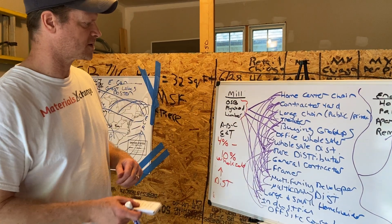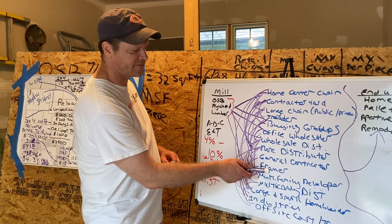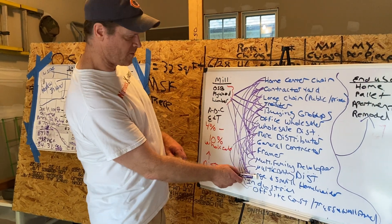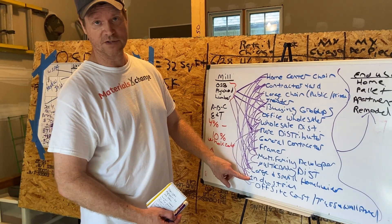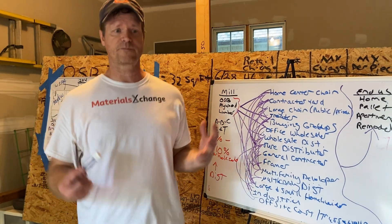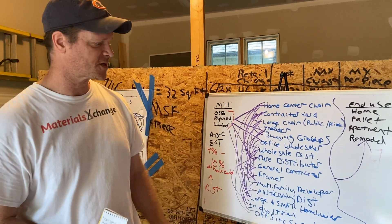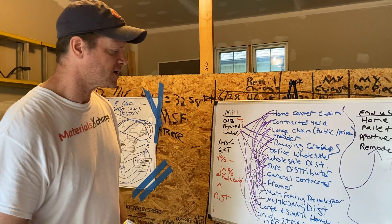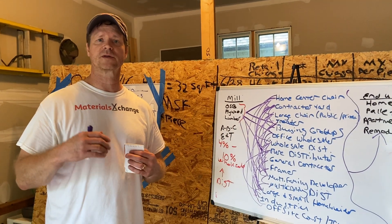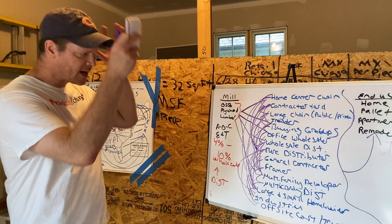Also adding a lot of value to the distribution chain: general contractors, framers, multifamily developers, multifamily distributors, large and small home builders, industrial — people that make pallets, crates, and so forth. They have different methods of coming up with solutions to package and create things. Off-site construction, truss and wall panel. And now we also have the big wooden engineered panels that we're using to build large frame construction out of. So that's kind of how the supply chain works.